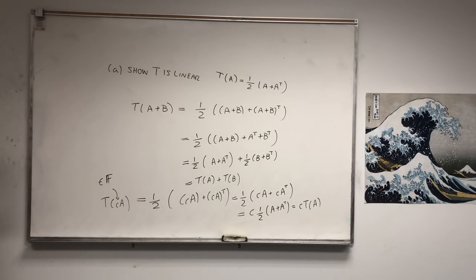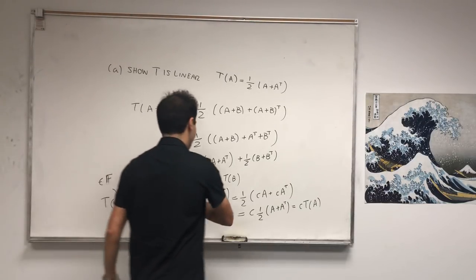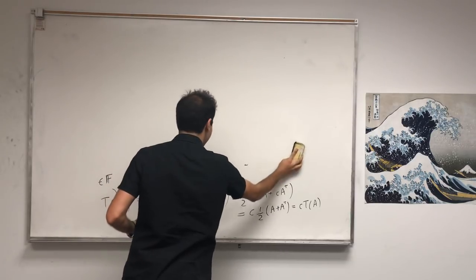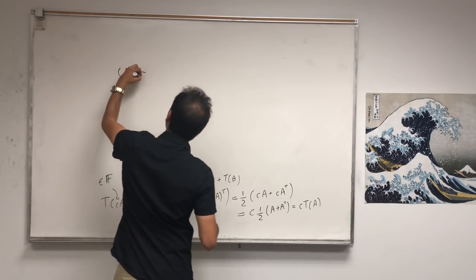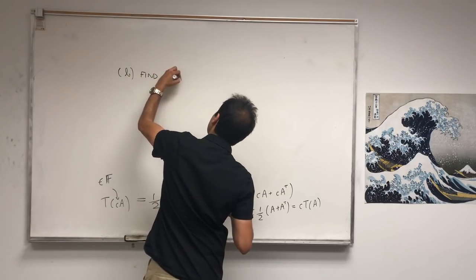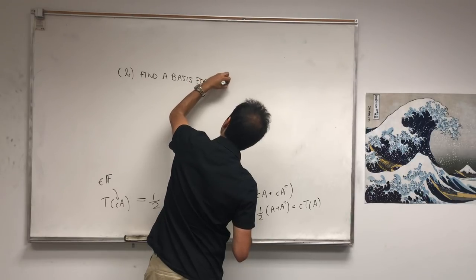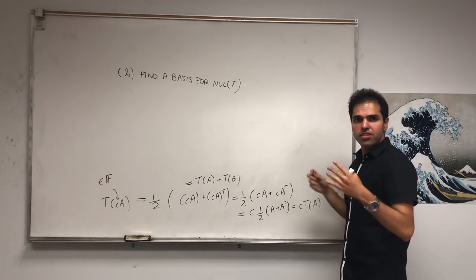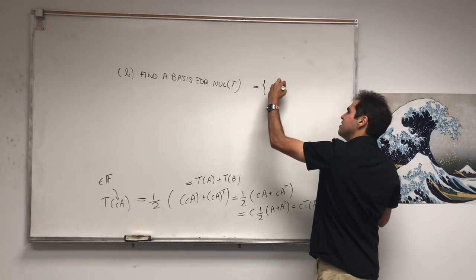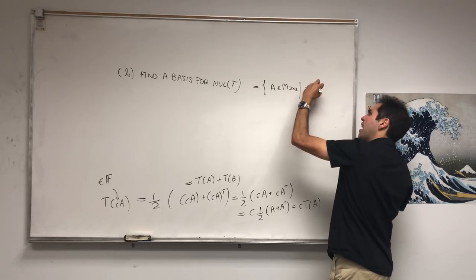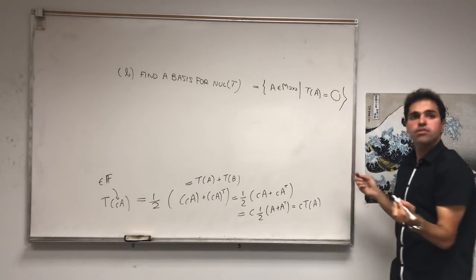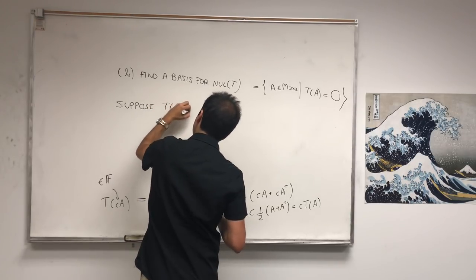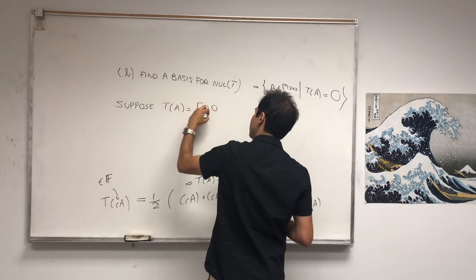The next question is, let's find a null space. The null space is the set of two-by-two matrices A such that T of A equals the zero matrix. So suppose T of A equals zero, where the zero matrix is [0, 0; 0, 0].